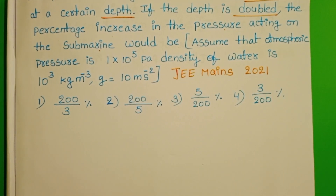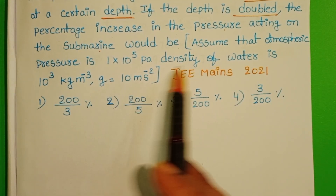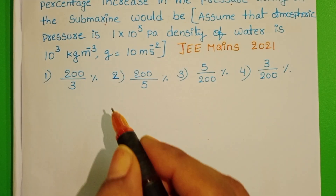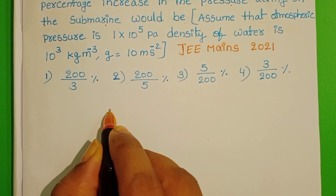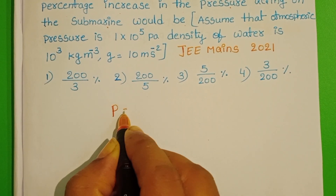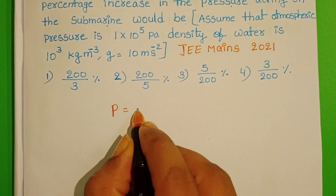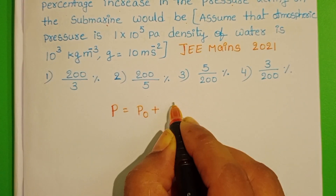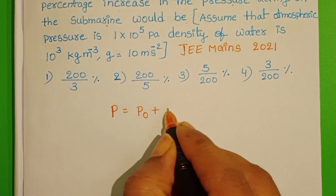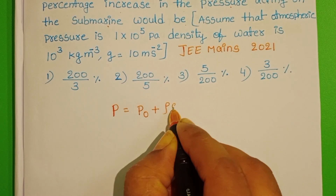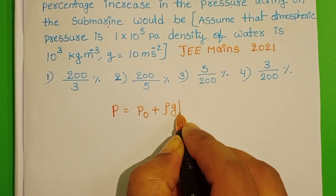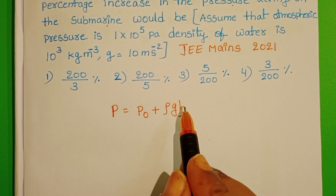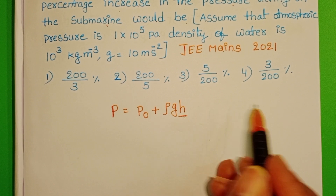We know the atmospheric pressure and also the density of the water. Pressure acting on the submarine equals atmospheric pressure plus pressure at the given depth — that is, ρgh. Let H be the depth of the submarine.